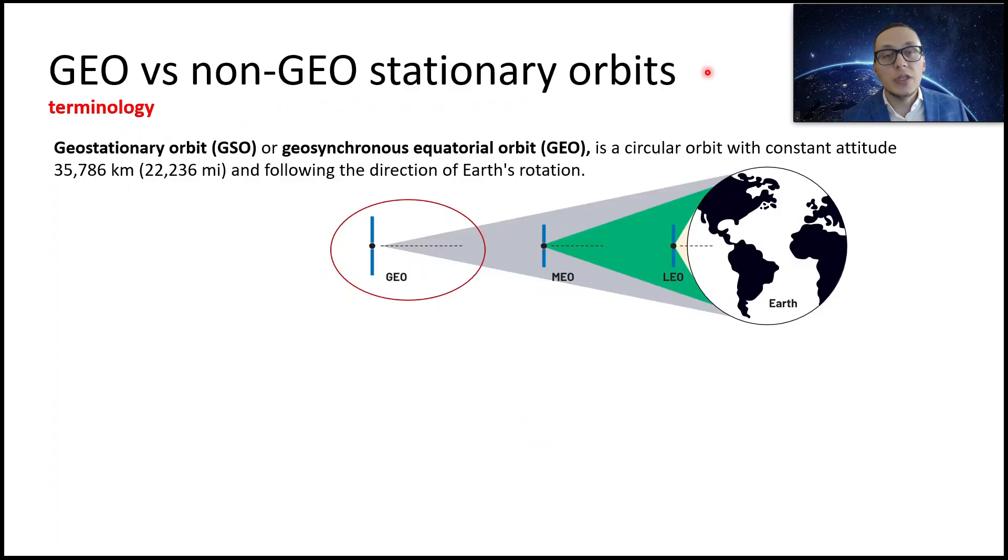As I said before, release 17 is the first release with NTN integration to mobile networks, and mainly they focused on geostationary and low earth orbits. Main focus here is fixed broadband and IoT services, but let's start with the terminology.